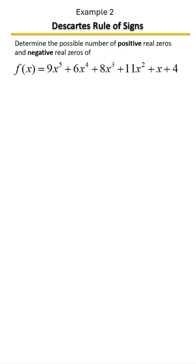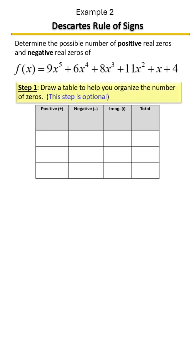Here we're going to determine the possible number of positive and negative real zeros of this polynomial. Step one, I'm going to draw a table to help organize our zeros. Next, we're going to look at the degree of our polynomial. This is a fifth degree polynomial, so my total number of zeros should always be five.